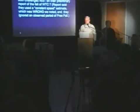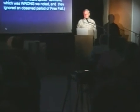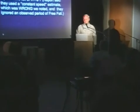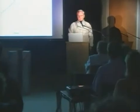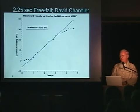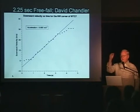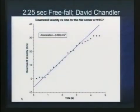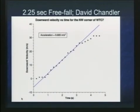I pointed out this is not good physics. They also ignored an observed period of free fall, as David Chandler pointed out. Here is what David Chandler noticed. These are the dots, our data points, actually taken from videos of the fall of World Trade Center 7. And fitting a straight line over this portion, as you can see, fits the data points very well for a period of about two and a quarter seconds.